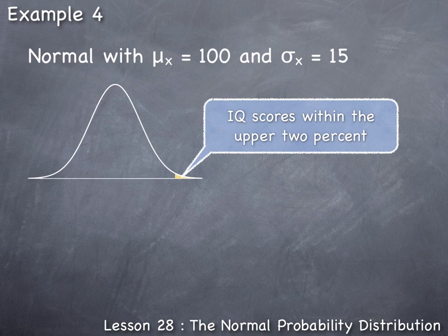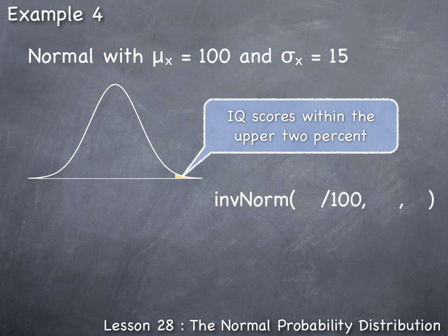To work from the percentage (the upper 2%) to find the particular data value (IQ score), we need to use the inverse norm command on the TI-84 calculator. The inverse normal command requires the input of three values.